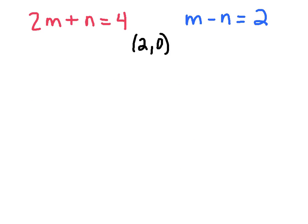My first equation, 2m plus n equals 4. If I substitute my values in, 2 times the m value plus the n value equals 4. I get 4 plus 0 equals 4. 4 equals 4. So I know that works.